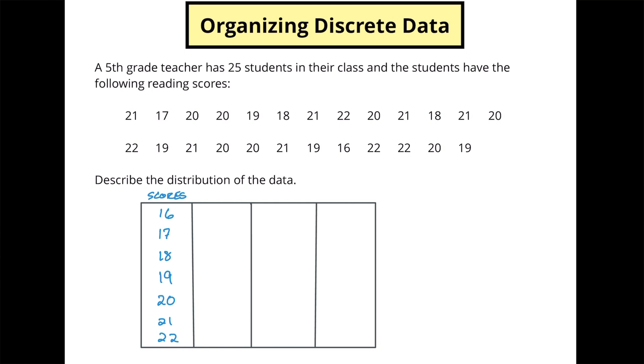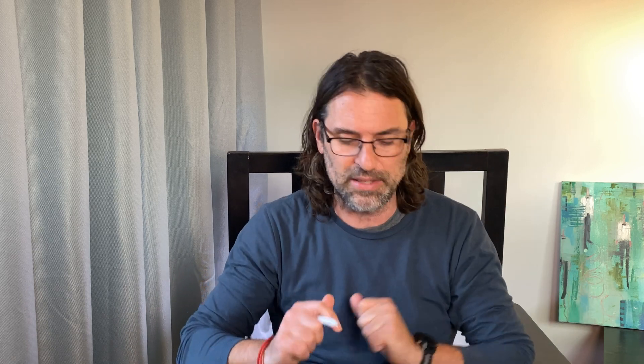Now the next thing we're going to put is our tally. If you want to organize these linearly, you're going to be doing essentially the same thing that we're doing right now. But this is kind of nice to have it organized this way. What I'm going to do is I'm going to go through and I'm going to check for all the 16s first. So I see one 16 here, so I'm going to put a tally there. Then I'm going to find the 17s. Here's one 17 and that's it. Just one 17 as well. Now we've got our 18s. One 18, two 18s.